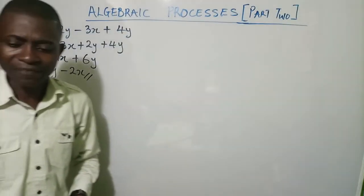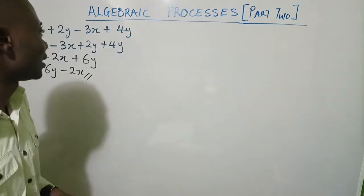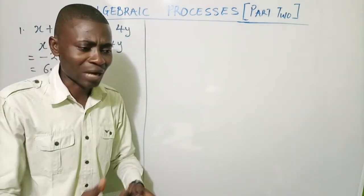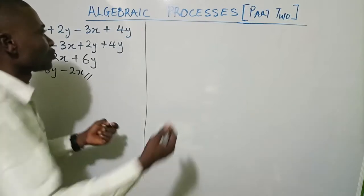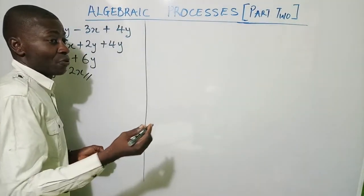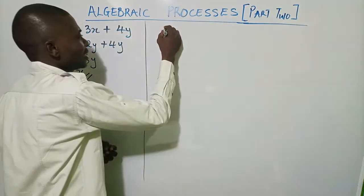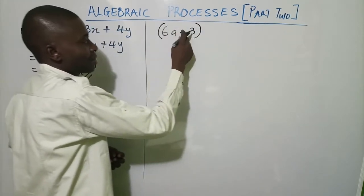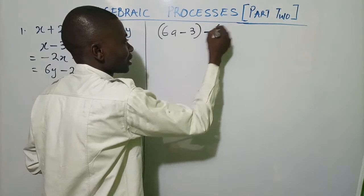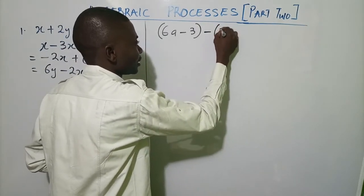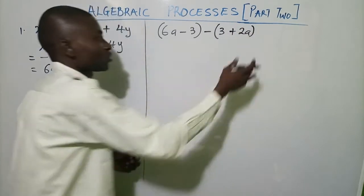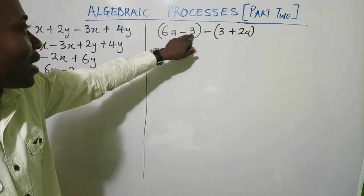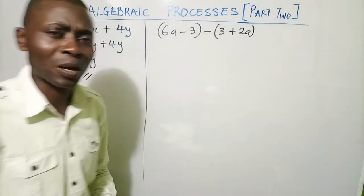That's one aspect of algebraic processes. Feel free to pick up your textbook and go through them. There's another aspect that people sometimes find difficult. For example, in an exam you may be asked to simplify: six a minus three, open bracket, minus open bracket three plus two a, close bracket. Simplify this algebraic expression.